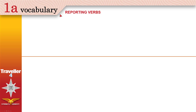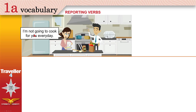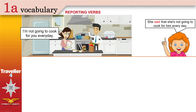Vocabulary: reporting verbs. What are reporting verbs? Look at the example: 'I'm not going to cook for you every day.' Now we want to report what she said. When we report, we say to others what she said to her husband. We can use 'say' — she said that she's not going to cook for him every day — or we can use the verb 'tell.' That's reported speech.